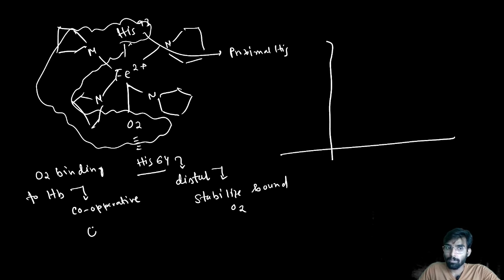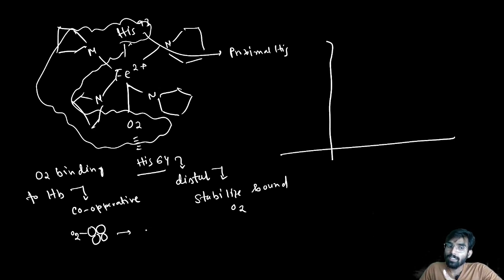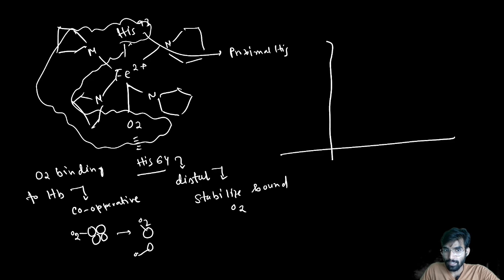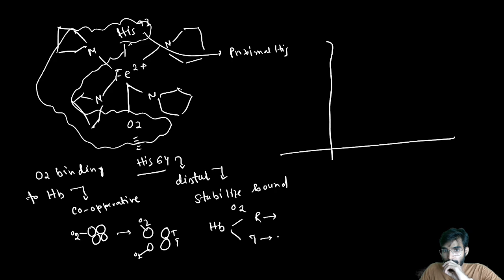Cooperative binding means: O2 binding to one subunit makes it more relaxed, and simultaneously the other subunits also feel relaxed and will bind oxygen too. Hemoglobin has two states: R (relaxed) and T (taut/tight). In the T state, hemoglobin has lower O2 affinity.